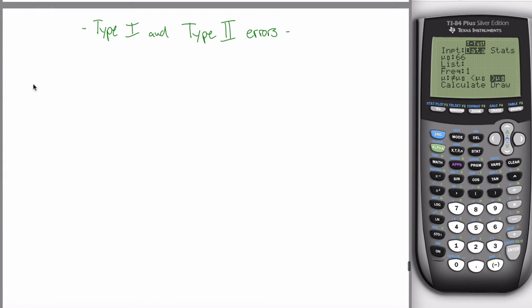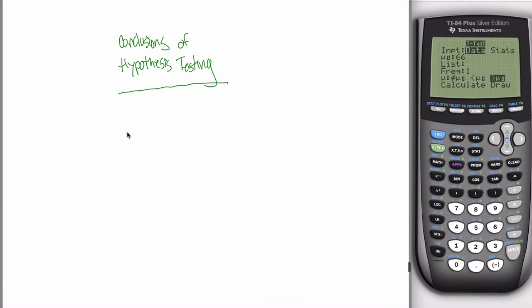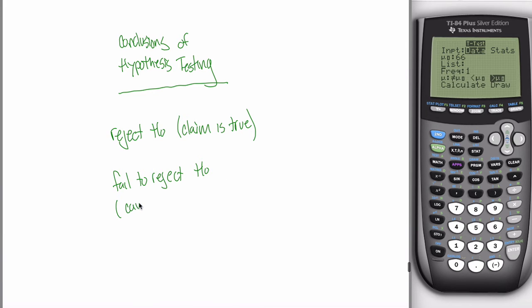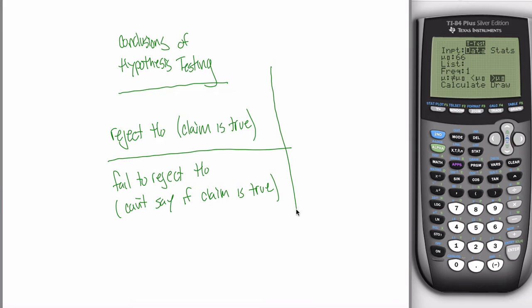When I talk about type 1 and type 2 errors, we have to think about what the possible conclusions of hypothesis testing are. There are really only two: either you reject your null hypothesis — meaning your claim is true — or there's not enough evidence and you fail to reject your null hypothesis, in which case you can't say whether the claim is true or not. It might seem like you should conclude the claim is true or false, but the logic of hypothesis testing only allows these two conclusions.